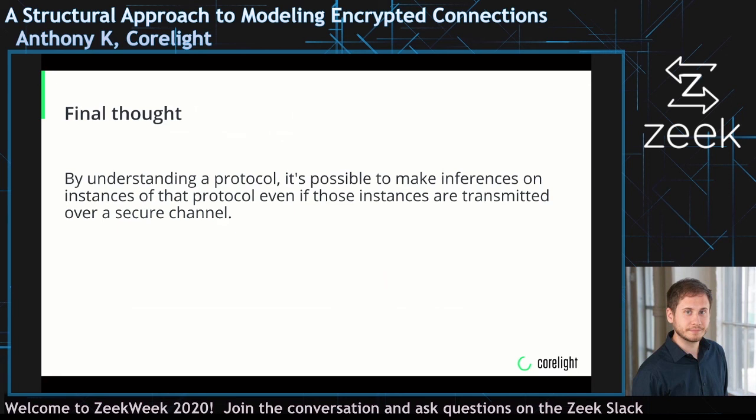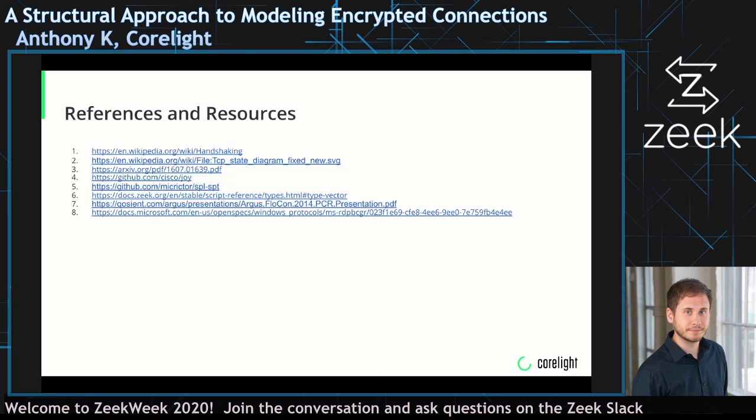With a minute left, here is my concluding slide — it's the same as my first slide. The one piece of information I hope everyone takes away is: by understanding a protocol and all of the semantic rules involved, it's possible to make inferences on instances of that protocol, even if those instances are transmitted within a secure channel such as TLS. Here are some references, and I also have some blogs on the Corelite website that you can go read. Thanks for listening.